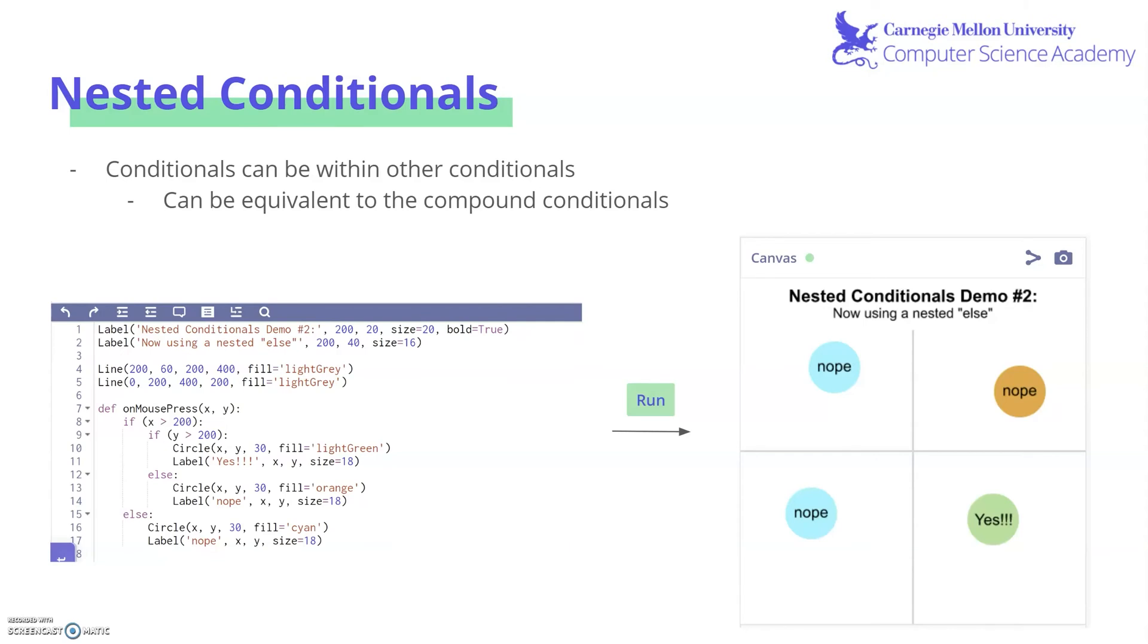Another way to test for multiple conditions is using nested conditionals, in which you put more conditionals within other conditionals. And these can actually be equivalent to compound conditionals. So let's take a look at this example down here.